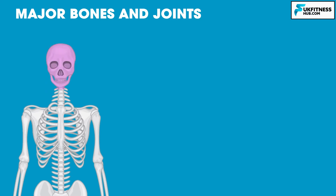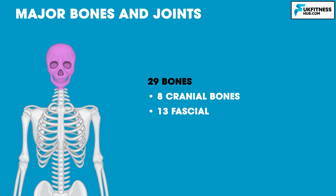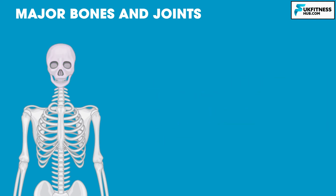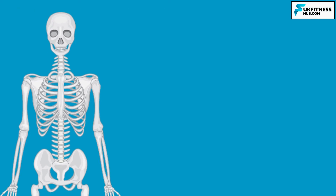From the top we have the skull, which consists of 29 bones: 8 cranial bones, 13 facial bones, 6 ear ossicles, and the hyoid bone, which can be found below the jaw at the top of the neck. The skull connects onto vertebrae, which have 4 main regions that make up the spine.